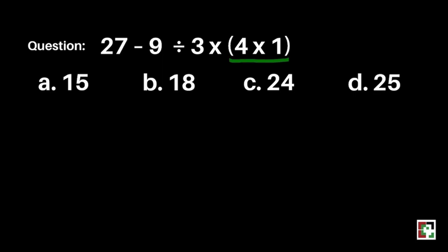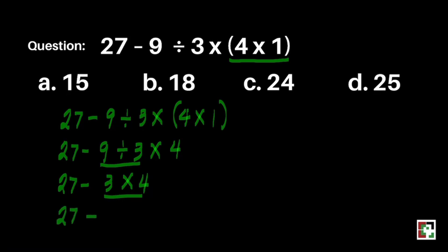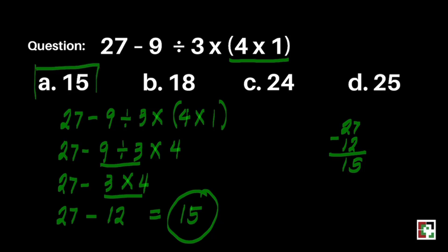We will do the groupings first — that's 4 times 1. Copying our given: 27 minus 9 divided by 3 times the quantity of 4 times 1. 4 times 1 is equal to 4. Next, we divide because division comes first here: 9 divided by 3 gives us 27 minus 3 times 4. Then we multiply: 3 times 4 is 12. 27 minus 12 is equal to 15. The answer is letter A.